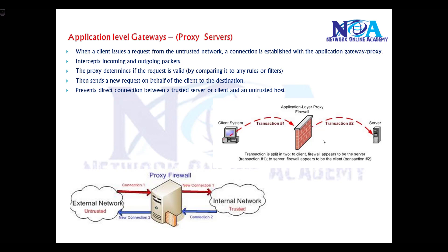There is another feature called application-level gateways. Most firewalls may or may not support this, depending on the product. In application-level gateways, the client issues a request from a trusted network and the connection is actually established by the gateway. In other words, we can also call these proxy servers.